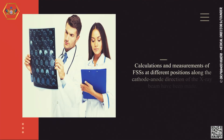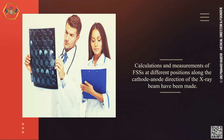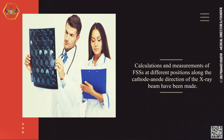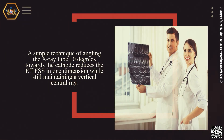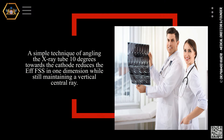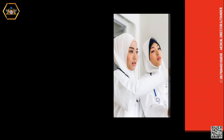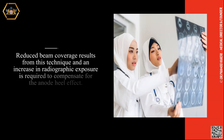Calculations and measurements of focal spot sizes at different positions along the cathode-anode direction of the X-ray beam have been made. A simple technique of angling the X-ray tube 10 degrees towards the cathode reduces the effective focal spot size in one dimension while still maintaining a vertical central ray. Reduced beam coverage results from this technique and an increase in radiographic exposure is required to compensate for the anode heel effect.